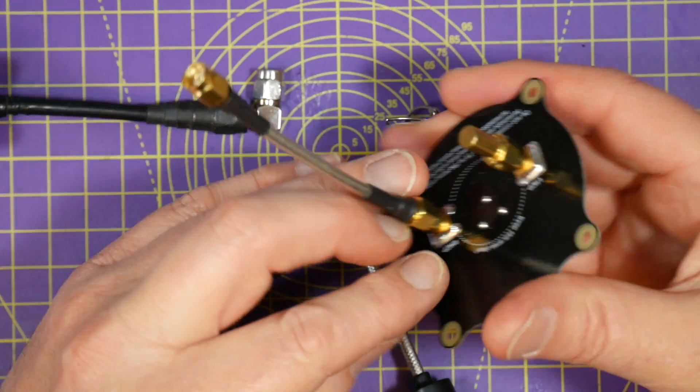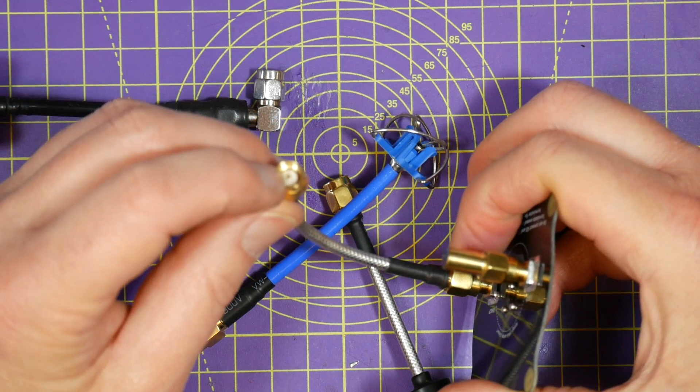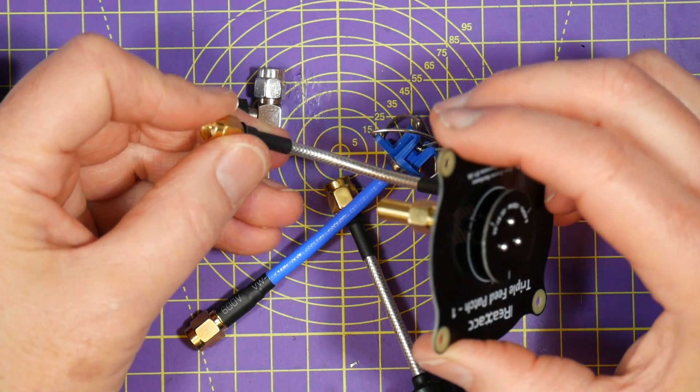And SMA connectors have the widest range of available antennas. For example, this patch antenna. This is an SMA. You can see it's got the screw here and we've got the pin in the middle. There's loads of these sorts of things around.